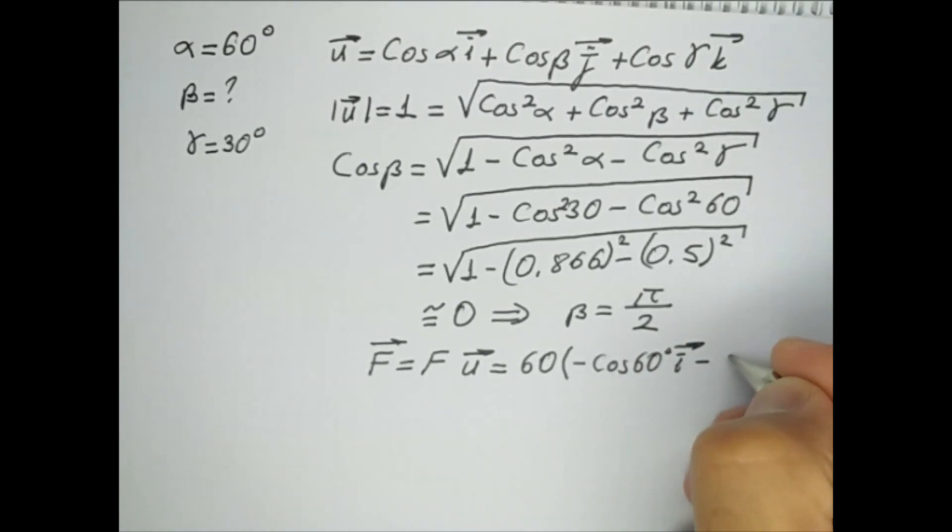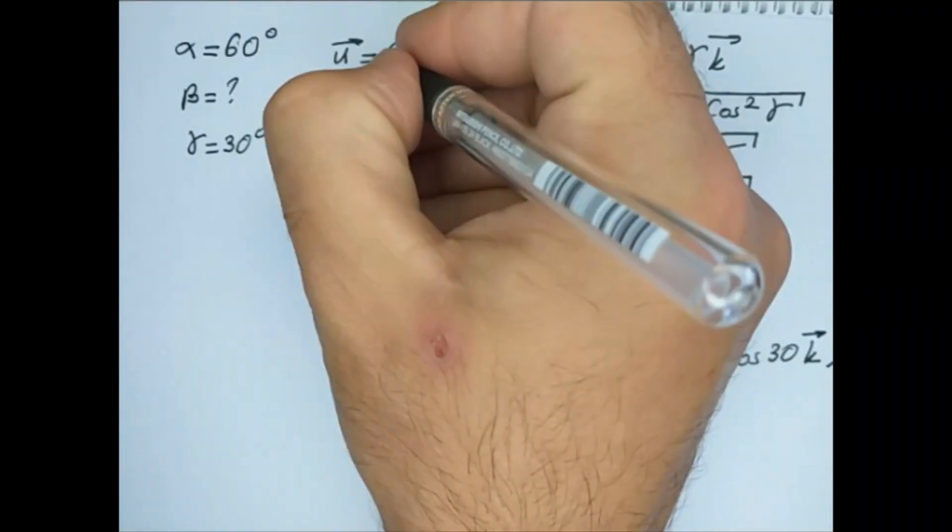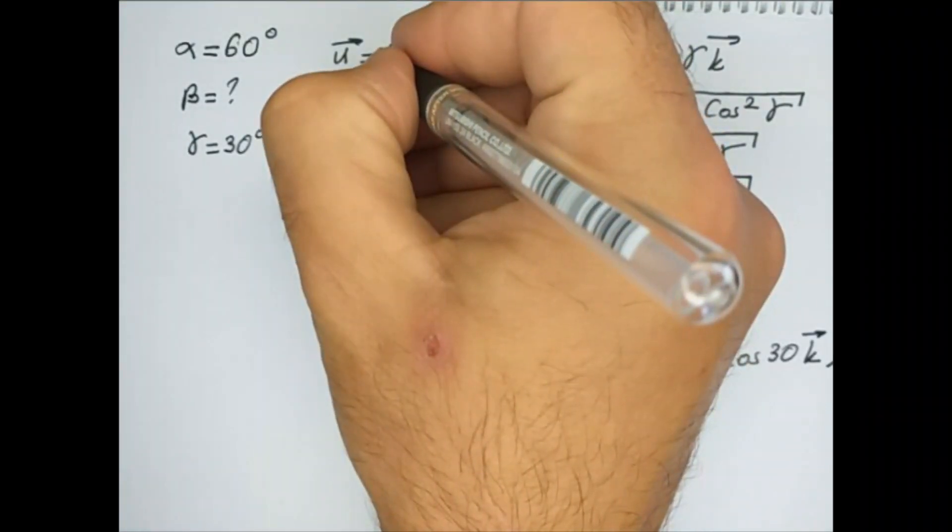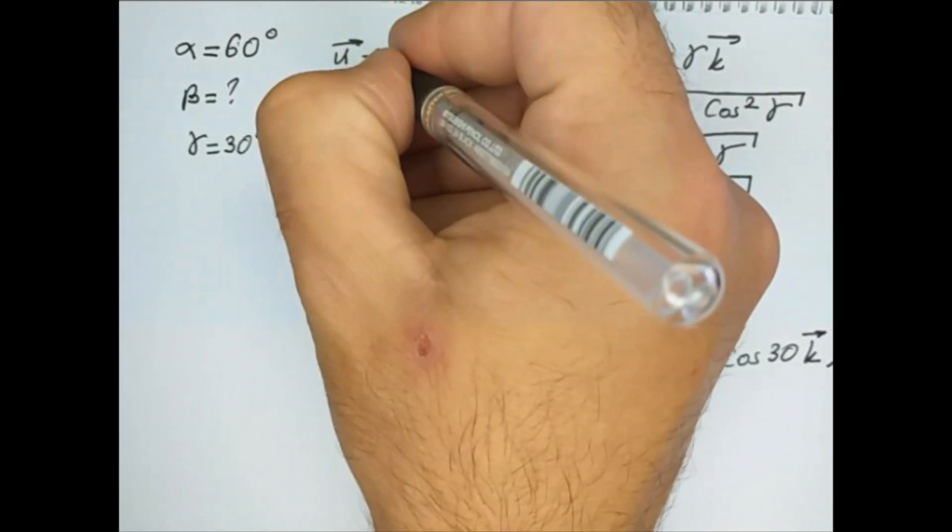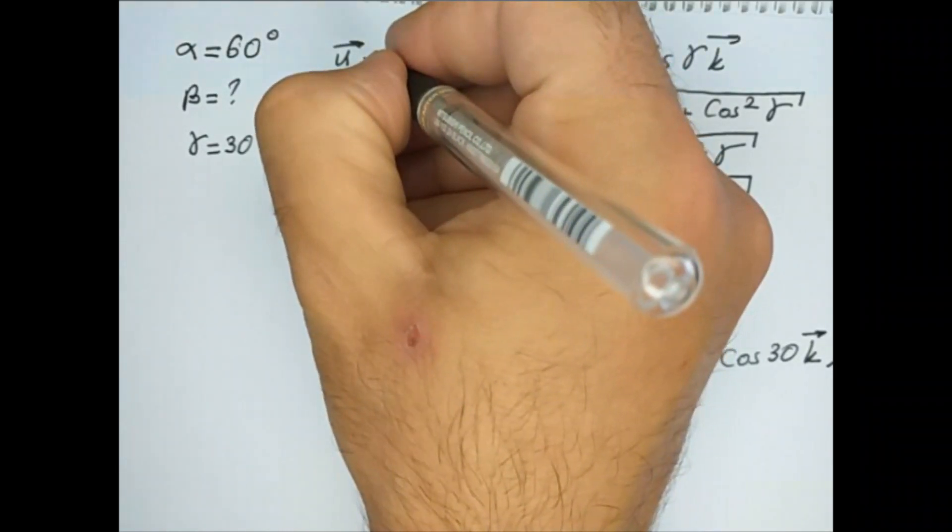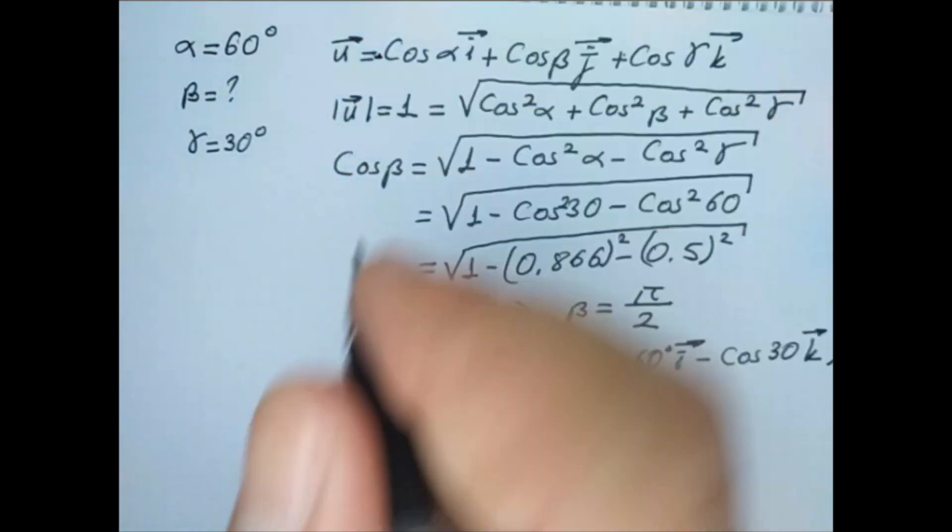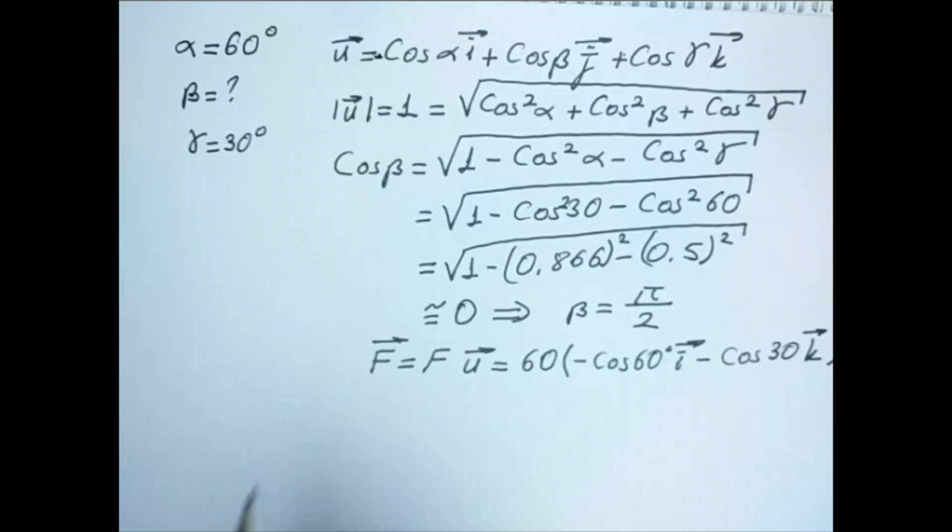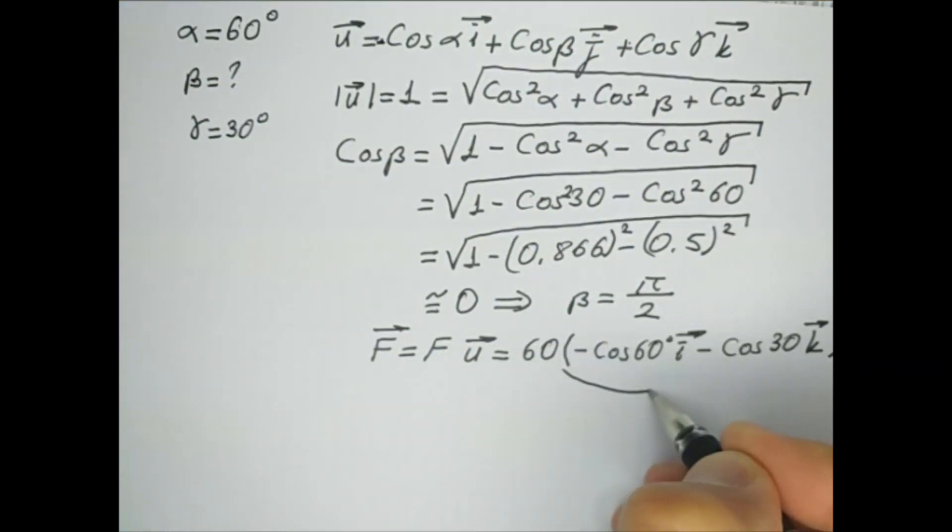So let me correct the unit vector here. This is minus. Yes, it doesn't matter. Let's remain in place. So this is my unit vector U. Okay. So this is my expression.